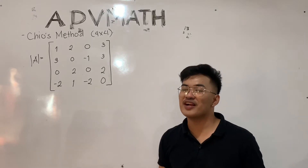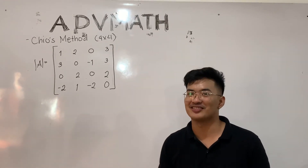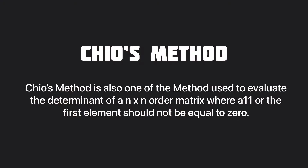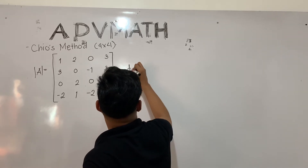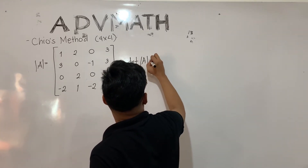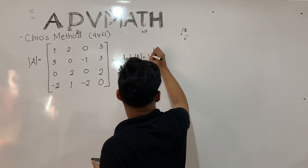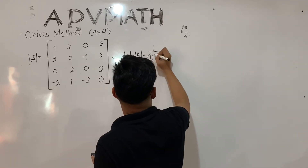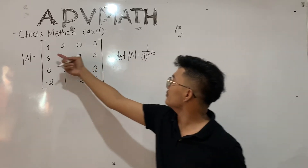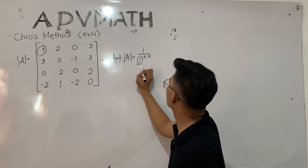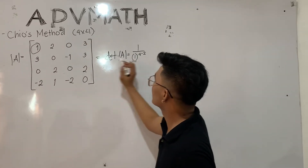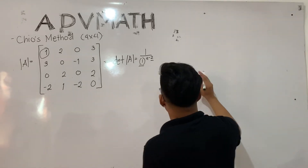Now let's solve a 4 by 4 matrix using Chiyo's method. Chiyo's method is another method used to evaluate the determinant of an n times n order matrix, where A11, the first element, should not equal 0. Since the first element is 1, we can proceed. If it were 0, we could interchange columns with a preceding negative sign. The solution formula for Chiyo's method is 1 divided by the first element, raised to n minus 2, multiplied by the elements of the matrix.